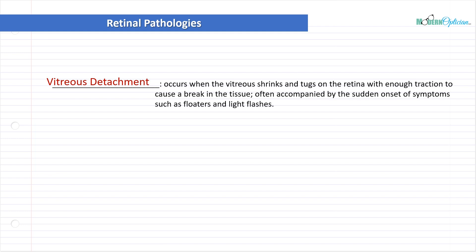Vitreous detachment is often accompanied by the sudden onset of symptoms such as floaters and light flashes. This is important because this common abnormality — usually happening because the vitreous starts to liquefy over time and becomes more viscous and can move around — mimics a retinal detachment. Most patients are aware that if you see flashes of light and have increased floaters, you should rush to your nearest eye care professional or hospital because you may be having a retinal detachment.